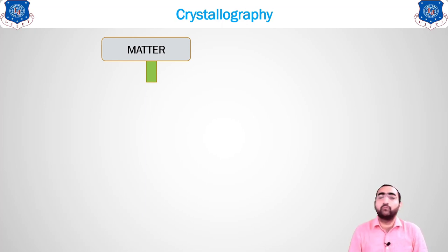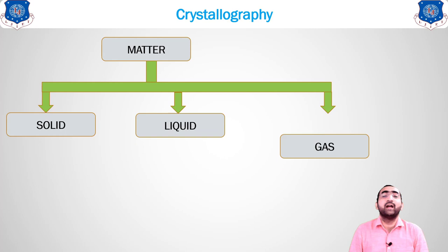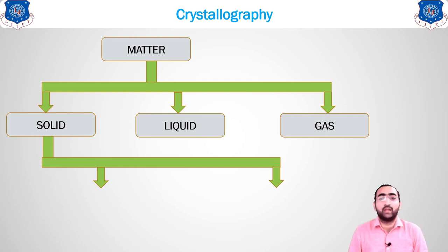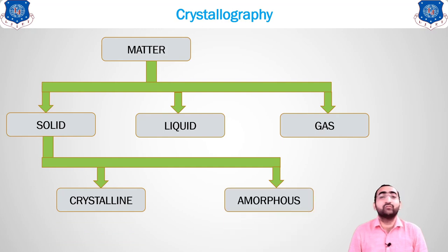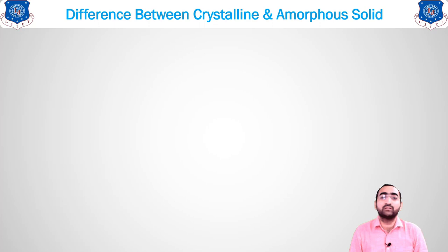Let us start with matter. Matter is anything that has mass and occupies space. Matter is divided into three types: solid, liquid, and gaseous. Solids are further divided into two types: crystalline solids, where atoms are arranged in a perfect, ordered manner, and amorphous solids, where atoms are located randomly.